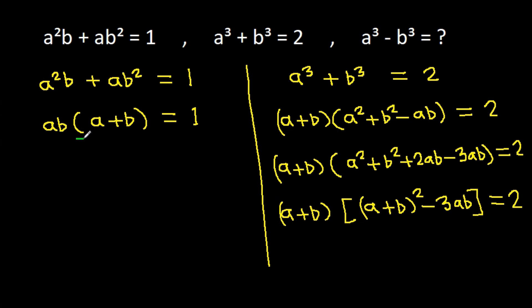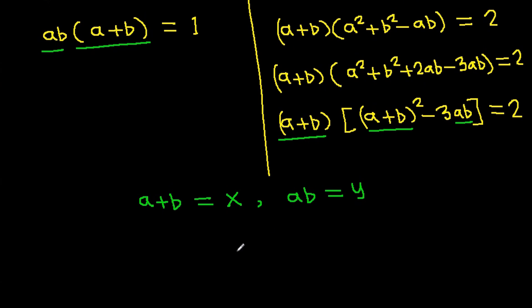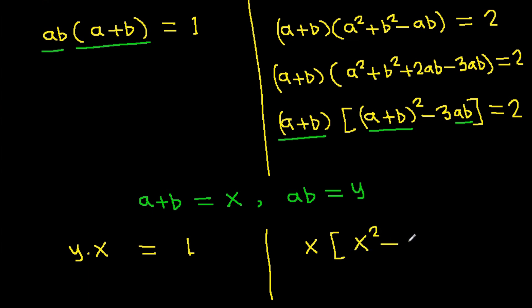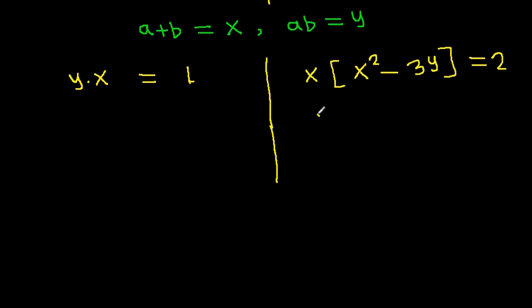Now we have a plus b and ab in our equations. Let us take a plus b equal to x and ab equal to y. Then from the first equation, we get y times x equals 1. From the second equation, x times (x squared minus 3y) equals 2, which gives x cubed minus 3xy equals 2.